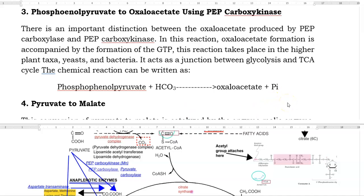Manganese serves as an important co-factor for this enzyme activity. And this reaction is an intermediate between glycolysis and TCA cycle. The chemical reaction is shown below.